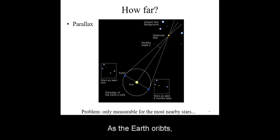As the Earth orbits, its vantage point changes towards the nearby star. The greater the apparent motion, the closer the star is.